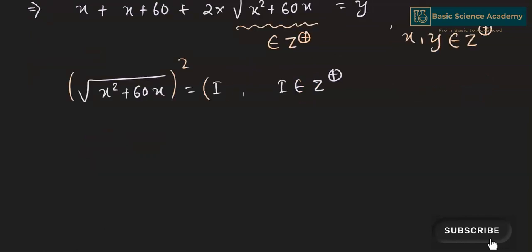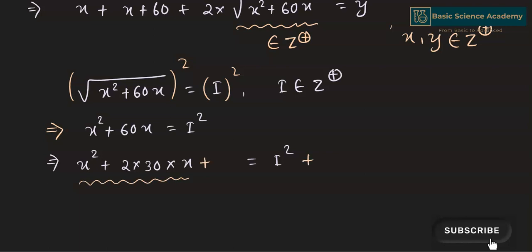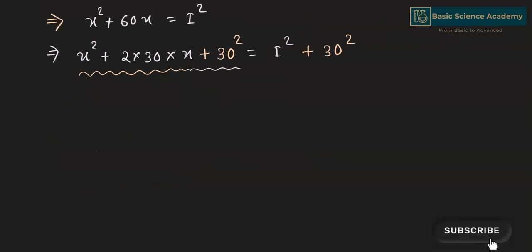Squaring both sides gives x² + 60x = i², which we can write as x² + 2·30·x = i². To make the left side a perfect square, we add 30² to both sides, giving (x + 30)² on the left.